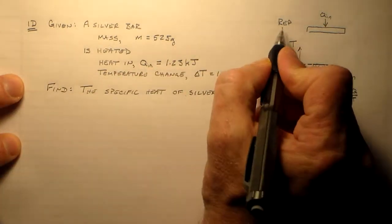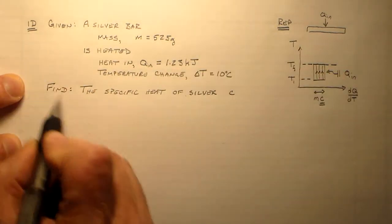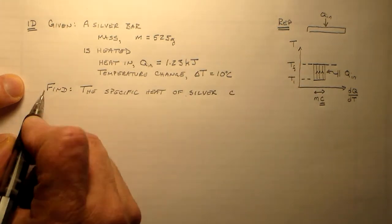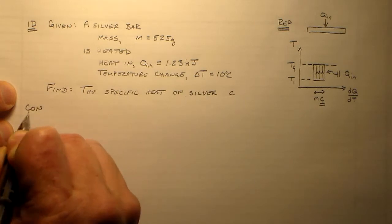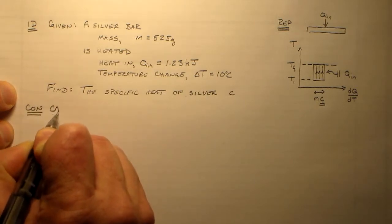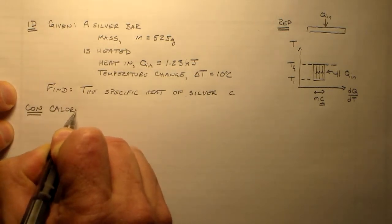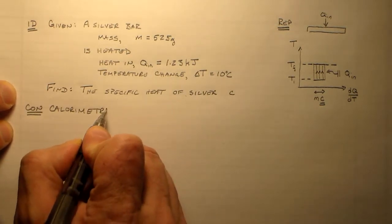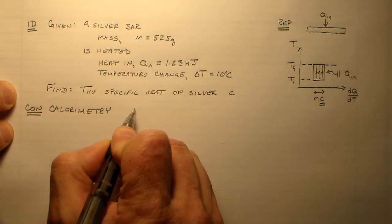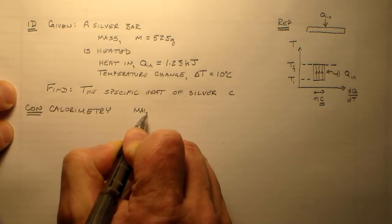So, we've got our ID. We've got our representation. We know everything about the problem. We know what everything looks like. And so, let's go to the concept. What sort of concept are we looking at here? This is a calorimetry problem. It's just backwards.